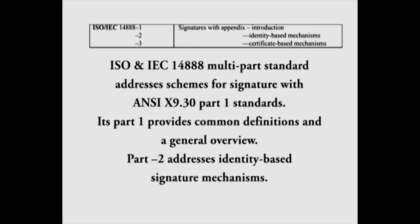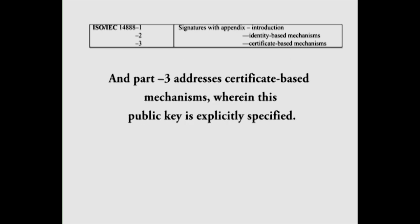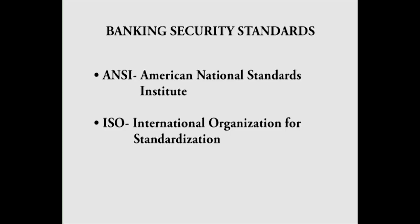ISO and IEC 14888 is a multi-part standard that addresses schemes for digital signatures. Its part 1 provides common definitions and a general overview. Part 2 addresses identity-based signature mechanisms and part 3 addresses certificate-based mechanisms wherein the public key is explicitly specified. So these were international cryptographic standards.